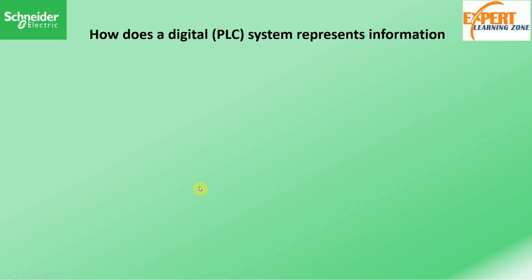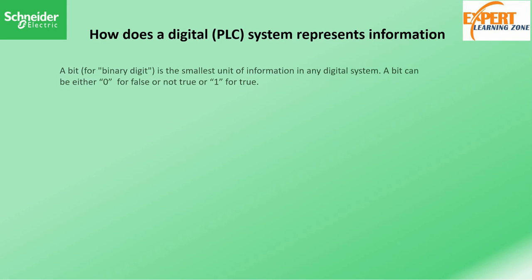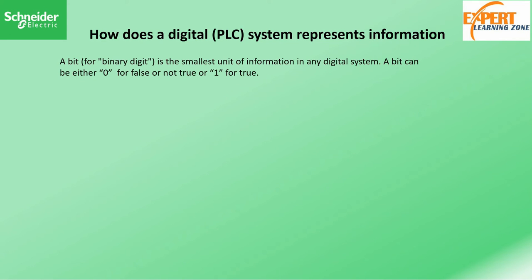Now, how does a digital or PLC system represent information? It does so in the form of a bit. A bit, which is actually a binary digit, is the smallest unit of information in any digital system. A bit can either be a zero for false, or a one for true.